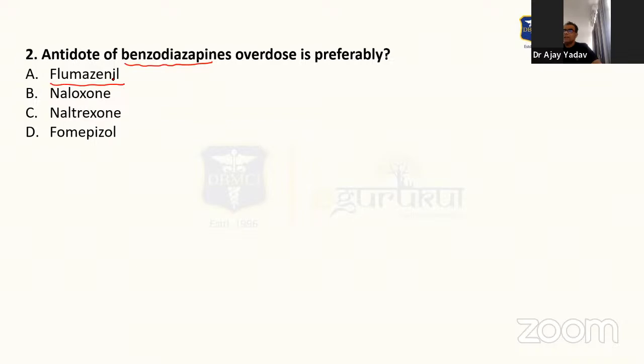So flumazenil is a specific benzodiazepine antagonist that is used for benzodiazepine overdoses. And the benzodiazepine that is used in anesthesia nowadays is only midazolam. During intraoperative period, we are only using midazolam. Diazepam or lorazepam, that may be used for premedication as tablets. However IV, we are only using midazolam.